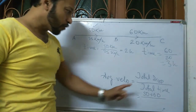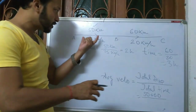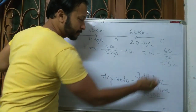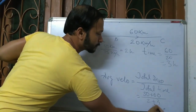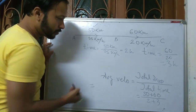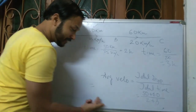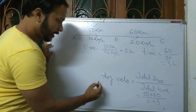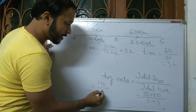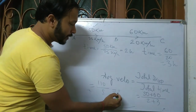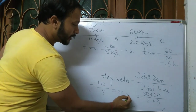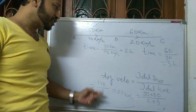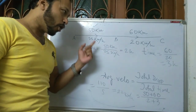We already have total displacement: 50 plus 60. Divided by total time: 2 plus 3. That equals 110 divided by 5, which is 22 kmph. This is the average velocity of that object.